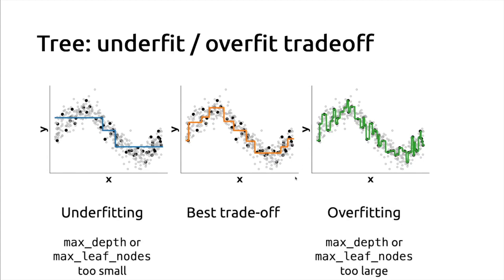To summarize: underfitting, good trade-off, overfitting — this is caused by a bad choice of the maximum depth of the decision tree or the maximum number of leaf nodes. In scikit-learn, you can control either the maximum depth or the maximum number of leaf nodes; both have an equivalent impact on controlling the underfitting versus overfitting trade-off.